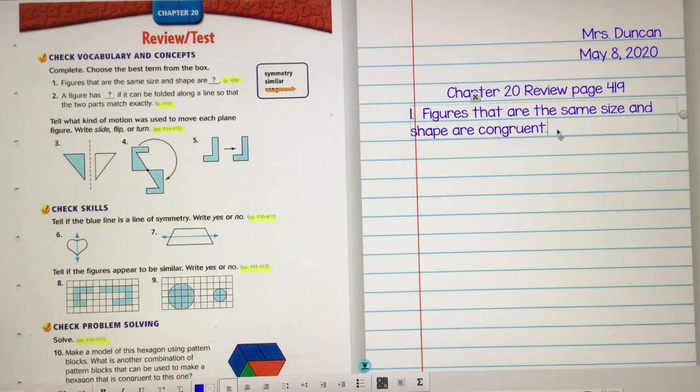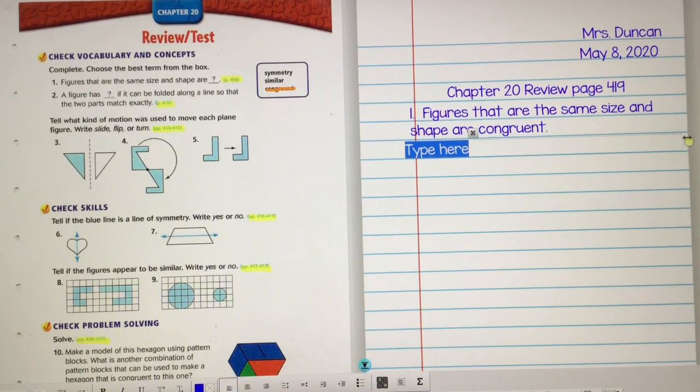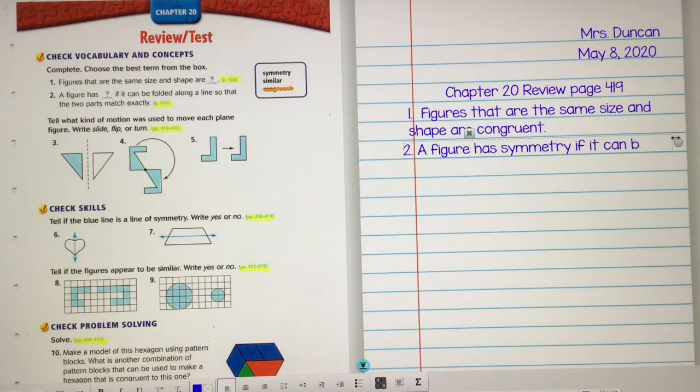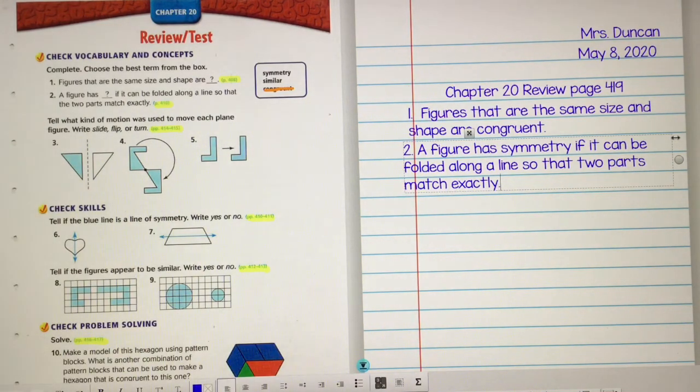So for number two, we are going to put a figure has symmetry if it can be folded along a line so that two parts match exactly. Period. So that was the end of our vocabulary for numbers one and two.